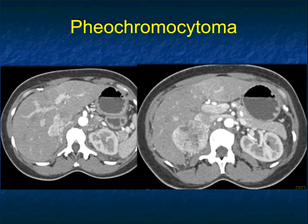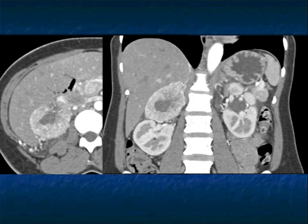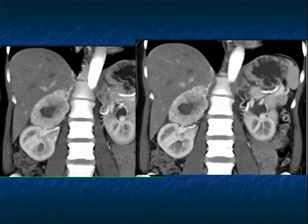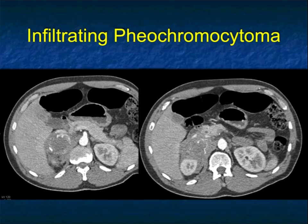Here's another example — a very vascular 7-centimeter pheochromocytoma with central necrosis. Central necrosis is not uncommon. The lesion has prominent vascularity around it. On the image on the left you see the vessels tracking by the right lobe of the liver. The central necrosis, the large solid mass — classic pheochromocytoma.